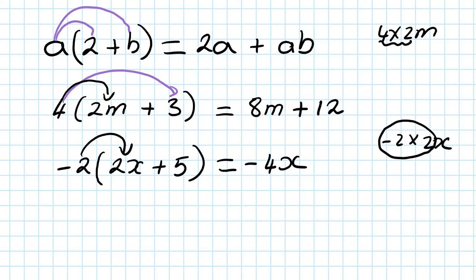And then minus 2 times 5. A minus times a positive gives you a negative. So 2 times 5 is 10. Otherwise, just use your calculator: minus 2 times 5, you should get minus 10, and just write that down.